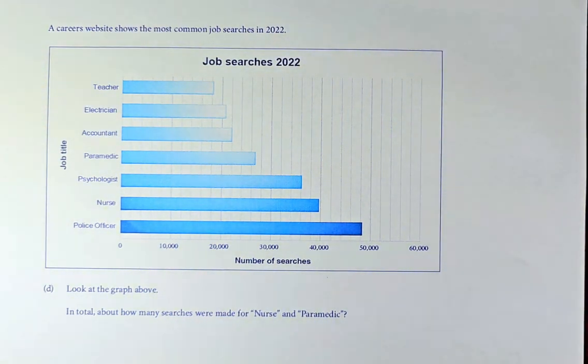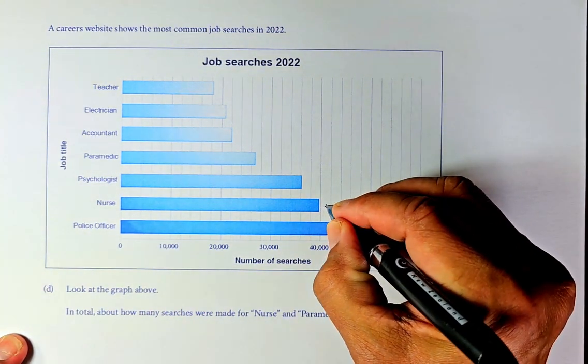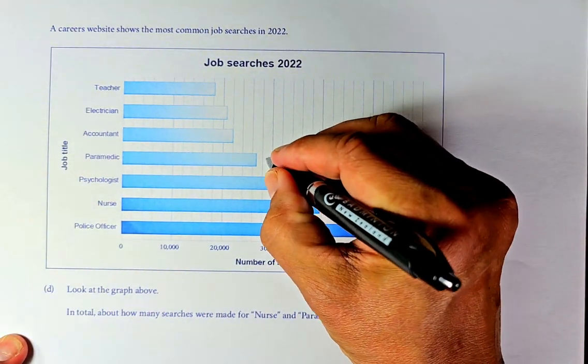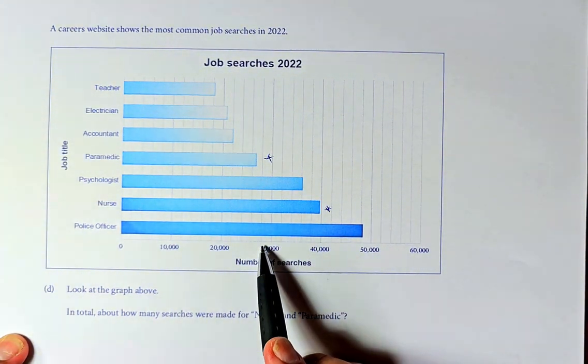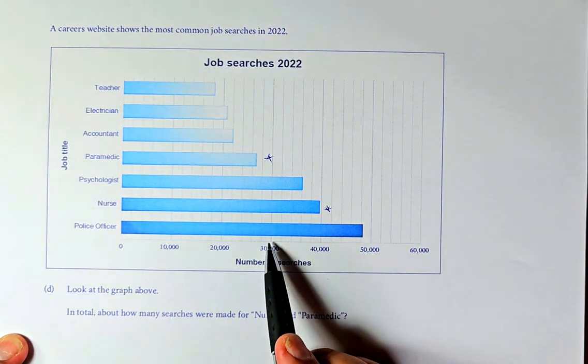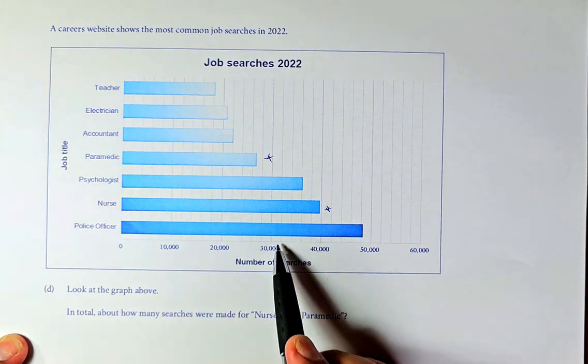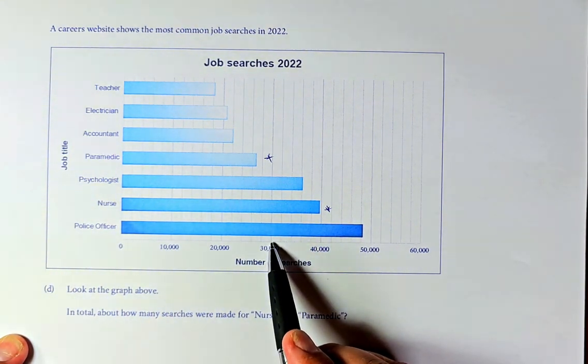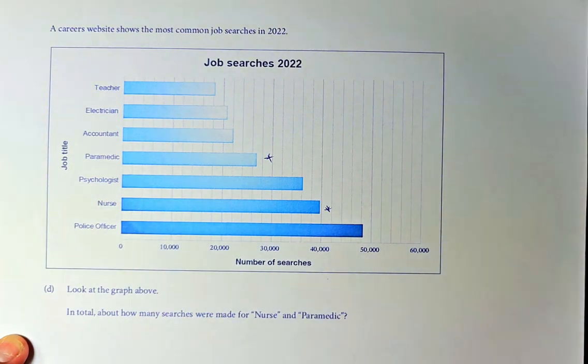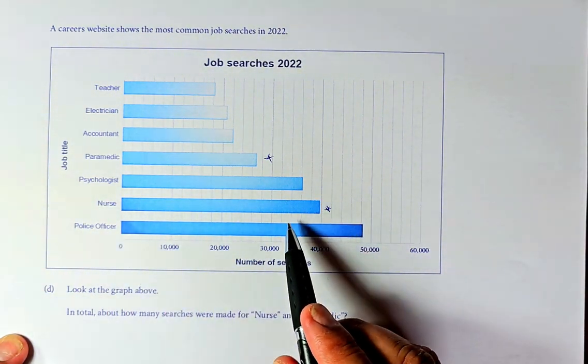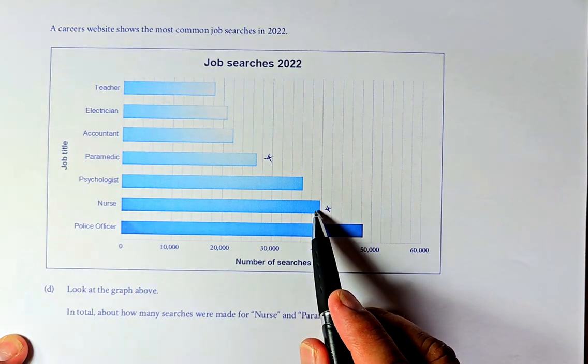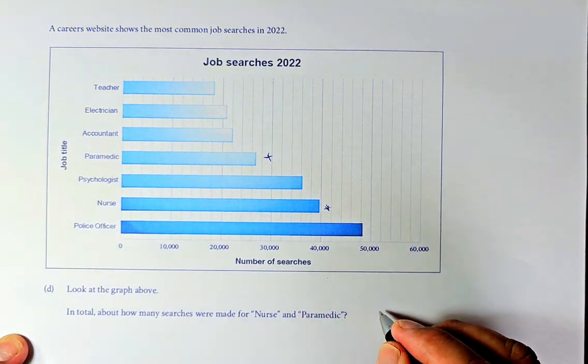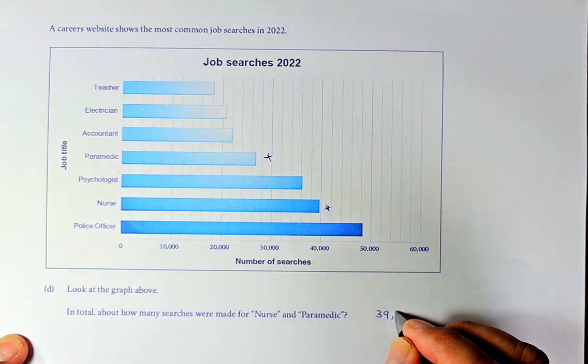The question asks, look at the graph above. In total, how many searches were made for nurse and paramedic? Nurse is here. And paramedic is here. So what we're going to do, we're going to calculate the nurse first. For every 30,000 to 40,000, you can see there are 5 numbers: 1, 2, 3, 4, 5. So every line is worth 2,000. So for nurse, it's going to be 32, 34, 36, 38 and a bit more, 39. And so nurse is going to be 39,500.